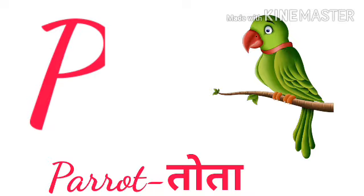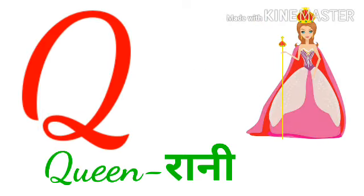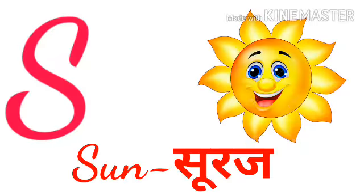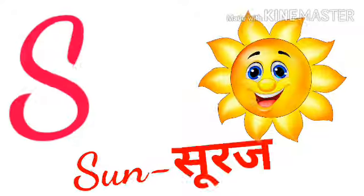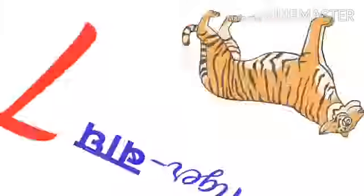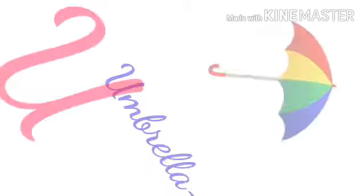P for parrot, parrot means tota. Q for queen, queen means rani. R for rabbit, rabbit means kargosh. S for sun, sun means suraj. T for tiger, tiger means bag.